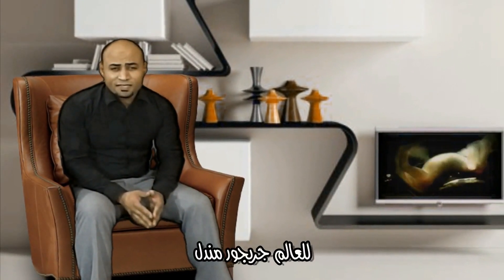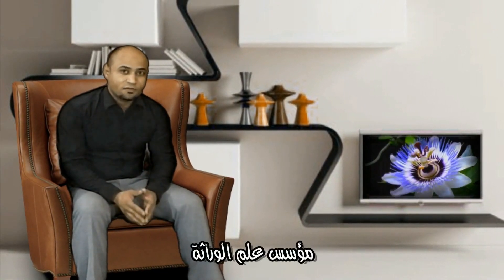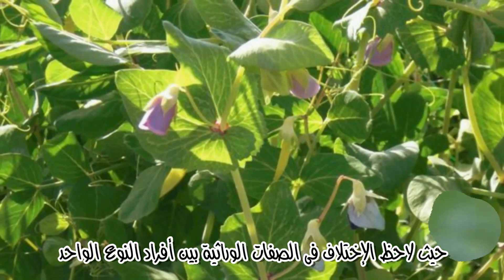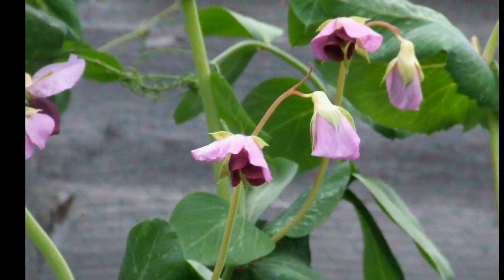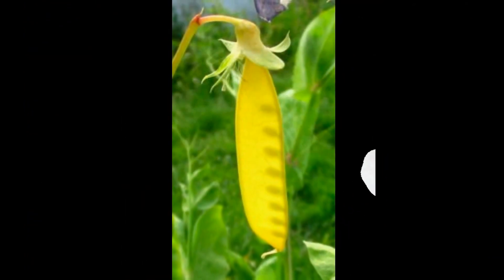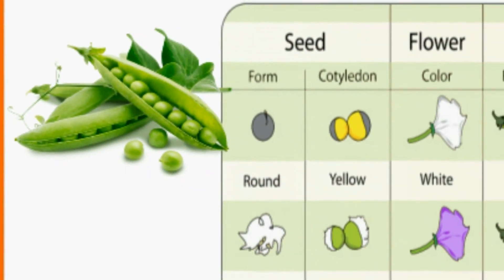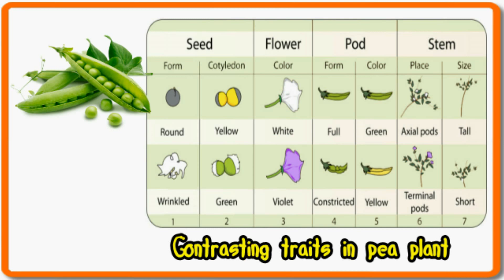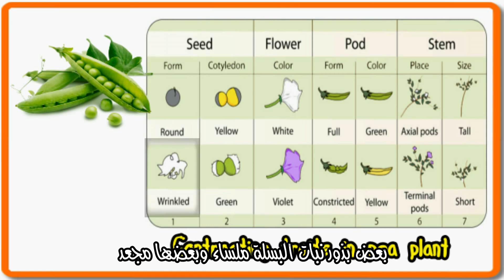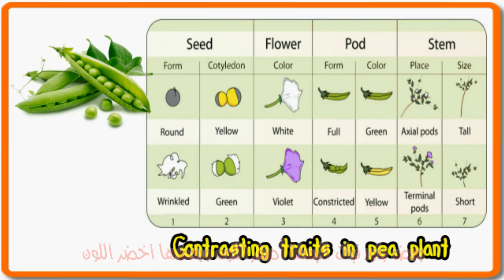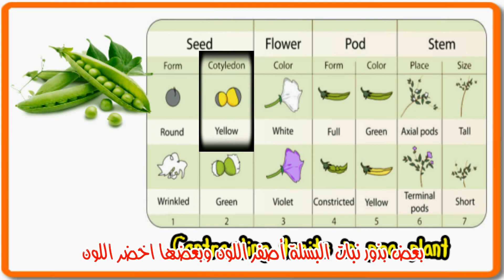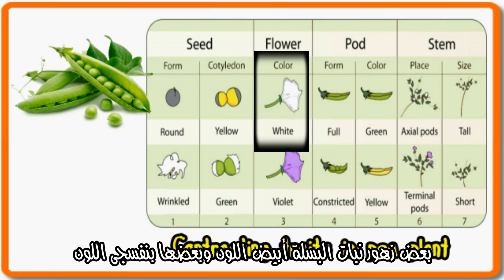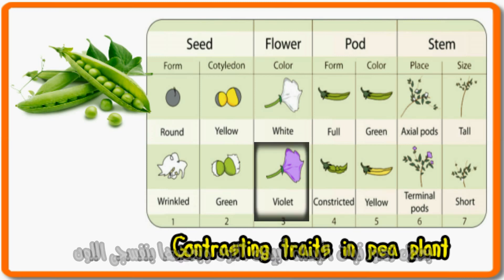Gregor Mendel, the founder of heredity, noticed the difference of hereditary traits between individuals of the same species. For example, he noticed the contrasting traits of pea plants, such as some seeds of pea plants are round while others are wrinkled. Some cotyledons of pea plant seeds are yellow but others are green. Some pea plant flowers are white while others are violet, and so on.